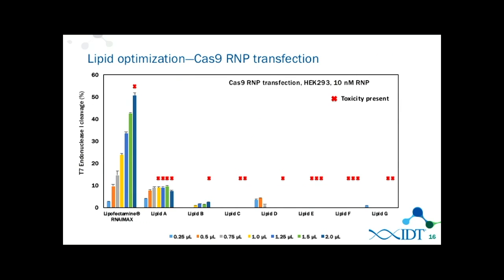We have tried several commercial lipids for delivering the RNP complex, and in our hands have only seen high efficiency when using Lipofectamine RNAiMAX or CRISPRMAX. Other commercially available lipids haven't given us the high level of robust editing we've seen, so I'm interested in finding other lipids or methods for delivering the RNP complex without having to use electroporation, which requires a lot of material and has associated toxicity. For easy-to-transfect cell lines we typically use RNAiMAX delivering 10 nanomolar of the RNP complex.